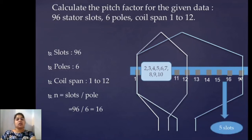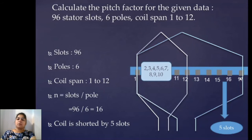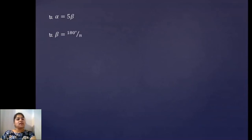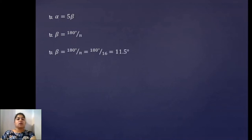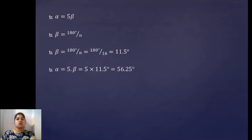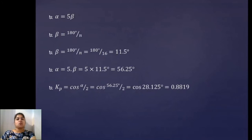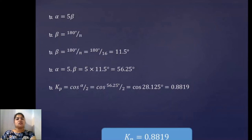The coil is shorted by 5 slots, so alpha will be 5 times beta, where beta is the slot angle. Beta equals 180 divided by N, and N is 16 for this problem, so beta equals 11.25 degrees. Substituting in alpha: alpha equals 5 times 11.25 which is 56.25 degrees. Substituting in the pitch factor equation — kp equals cosine of alpha by 2 — we get the value of pitch factor as 0.8819.